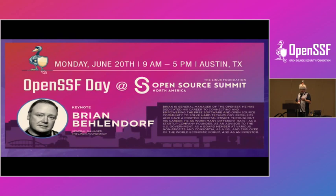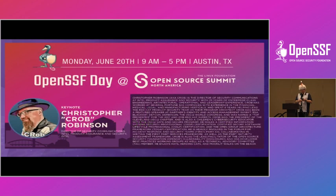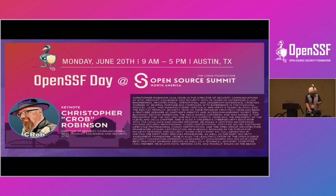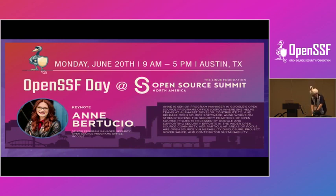Stephen was not able to join us, so we have Naveen Srinivasan here speaking on behalf of our friend Stephen. Jeff is an engineer at Google's open source security team focused on supply chain security and securing Google's GitHub repositories. Please, Jeff and Naveen, take it away — we would love to hear more.